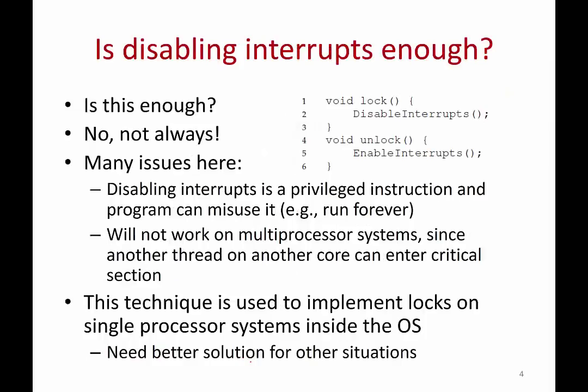Here's a thought: if you remember the critical section example, a thread got interrupted at the wrong point of time. The value of a counter was read into a register, but before it could be written back into memory, it got interrupted. So is it enough if you just disable interrupts when making changes to some critical section — is it enough to just stop interrupts and ensure you run continuously on the CPU?